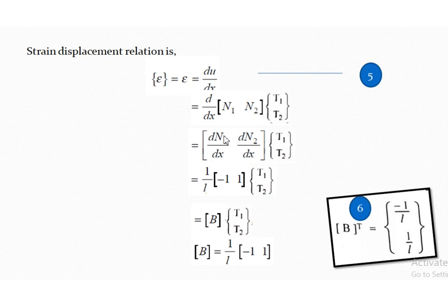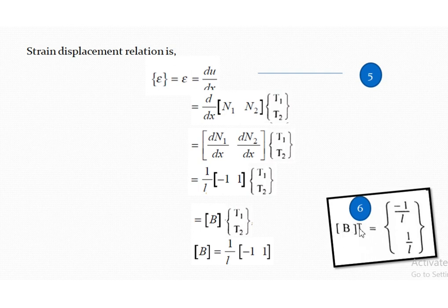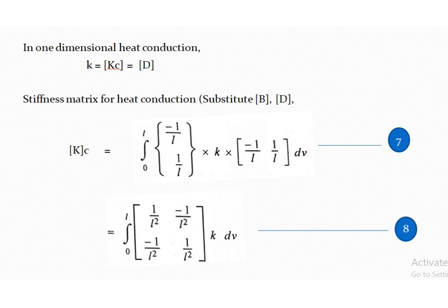Taking d/dx of (x/L), since d/dx of x equals 1, you get 1/L. Taking 1/L outside, the B matrix is written as [−1/L, 1/L]. The B transpose, required for the derivation of the stiffness matrix, is the column vector [−1/L, 1/L], which we consider as equation 6.